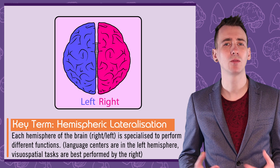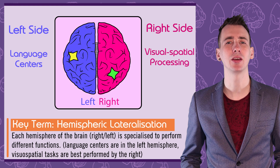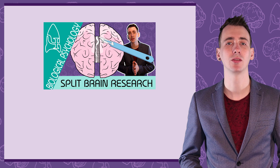Hemispheric lateralisation is the idea that the left and right hemispheres of the brain have some cognitive functions that are specialised to that side. Broca's and Wernicke's areas are the best example of hemispheric lateralisation of the left hemisphere, with the right hemisphere being dominant in visuospatial functions. A great evaluation showing hemispheric lateralisation is Sperry's split brain patients, covered in another video.